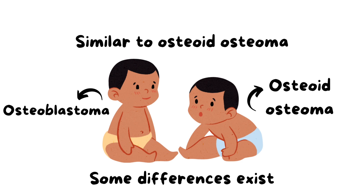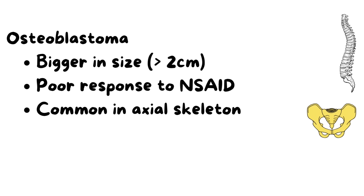It has many similarities to osteoid osteoma, but there are also many differences. Osteoblastoma is usually bigger in size — more than two centimeters — whereas osteoid osteoma is usually smaller and less than two centimeters. Osteoblastoma has a poor response to NSAIDs or aspirin for pain, whereas in osteoid osteoma the pain responds very well to NSAIDs and aspirin.